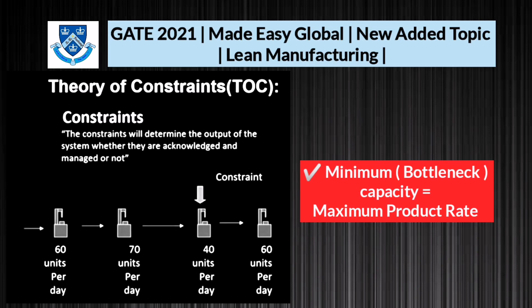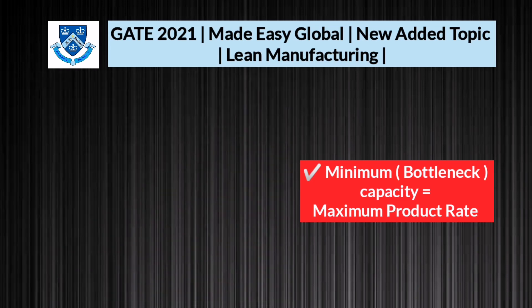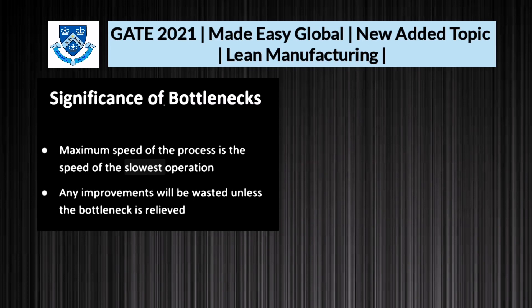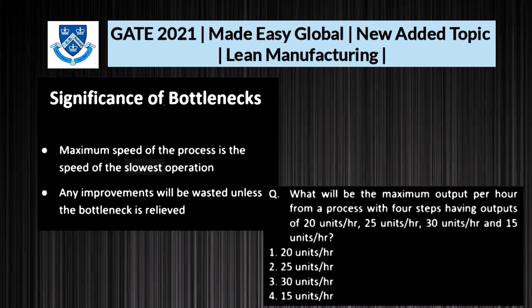The next topic is Theory of Constraints. Constraints determine the output of the system whether acknowledged or not. Minimum capacity equals maximum production rate. The maximum speed of a process is the speed of its slowest operation — the bottleneck — and any improvements are wasted unless the bottleneck is relieved. For example, a process with four steps outputting 20, 25, 30, and 15 units per hour will have a maximum output of 15 units per hour.